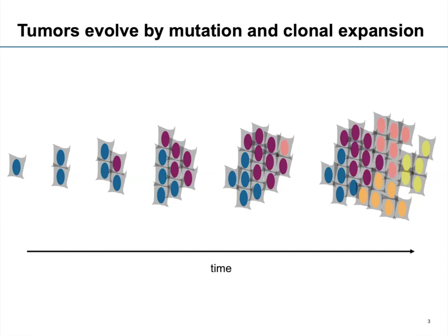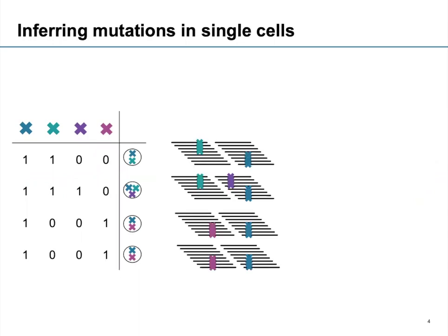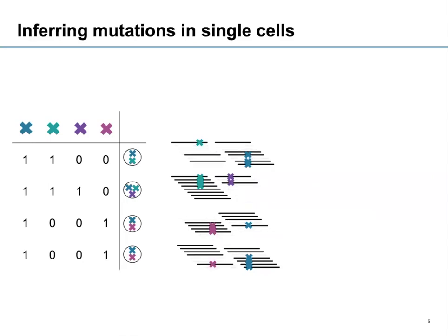What we'd like to have is a table telling us, for all the cells, which mutations are present. We can acquire this information by looking at reads — some of them harbor the mutation. From a nice clean dataset, we would very easily identify the correct mutation-to-cell assignment. However, in practice, we get very noisy data. In many cases, we don't have much support for a mutation to be called. But we can make use of our knowledge that all these cells had a common ancestor, and if we can combine this phylogenetic structure with mutation calling, we might overcome the problems with noisy data.